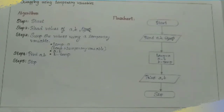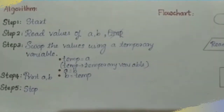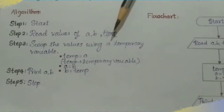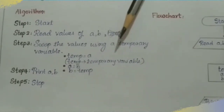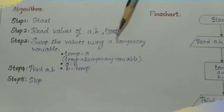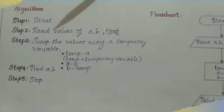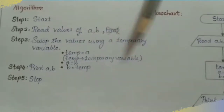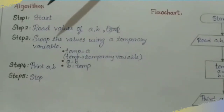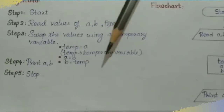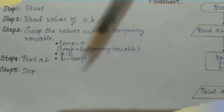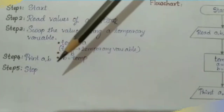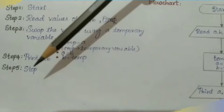First, write the algorithm. Step 1 is Start. Step 2 is: read the values of A and B. Step 3 is: swap the values using temporary variables — temp equals A, A equals B, B equals temp. This is the swapping process. Step 4 is: print A and B to show the swapped values. The next step is Stop.